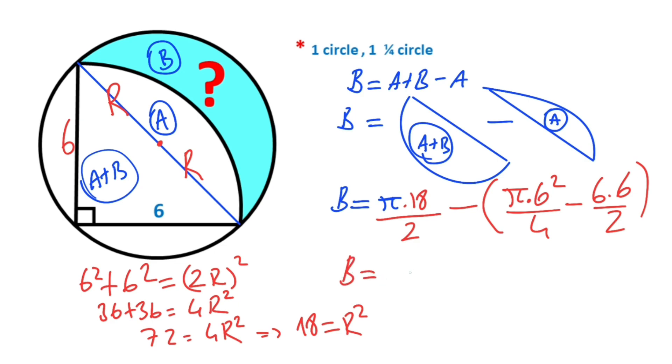Region B equals 9π minus, minus 9π plus 18. These cancel, that means the blue shaded area equals 18 unit squared.